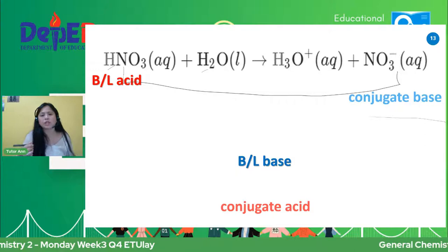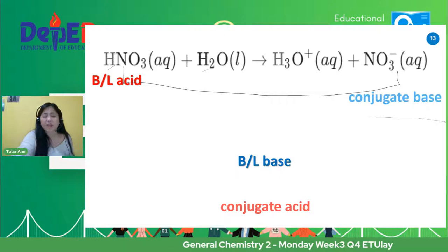From HNO3, naging NO3 siya. Ang definition ng Bronsted-Lowry acid is the substance that is capable of donating. This substance HNO3 is capable of donating. And then ang kanyang conjugate base ay ang NO3 — yung natanggalan ng proton. This is the substance formed after it has donated the proton. So na-donate na ni HNO3 kay water, kaya naging NO3 na lang siya. Kaya siya ang ating conjugate base.